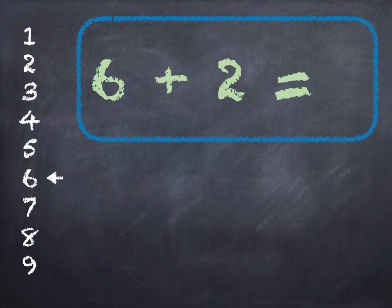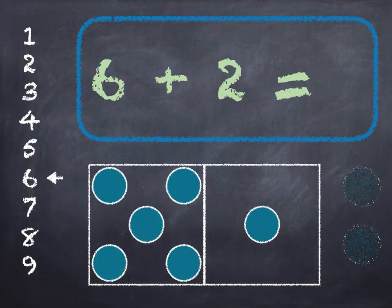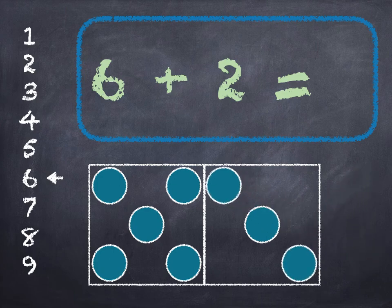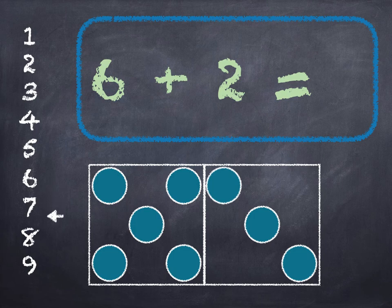6 plus 2. 6 in the box, add 2 on. 6, 7, 8. Start at 6 on the number line and go down 2. 1, 2. We get to 8. 6 plus 2 is 8.